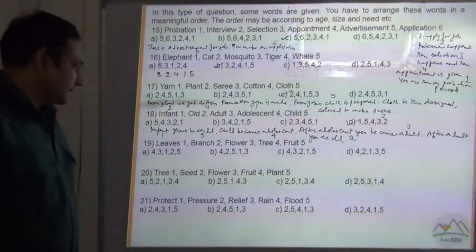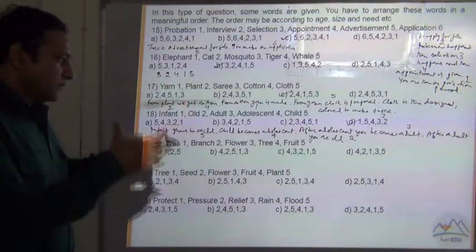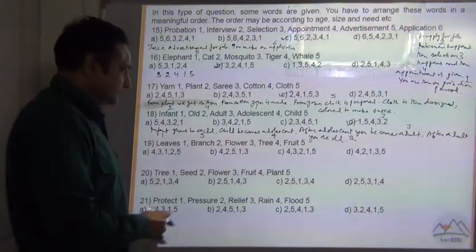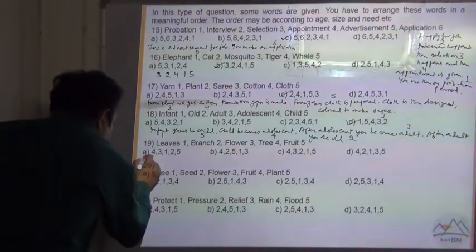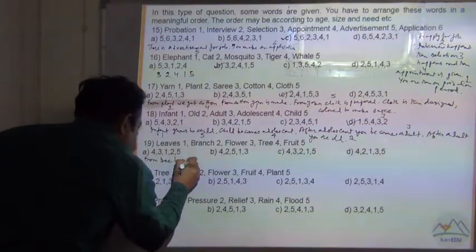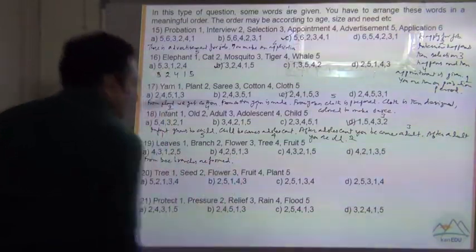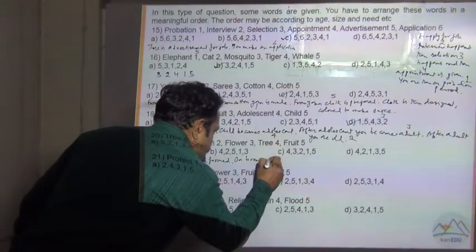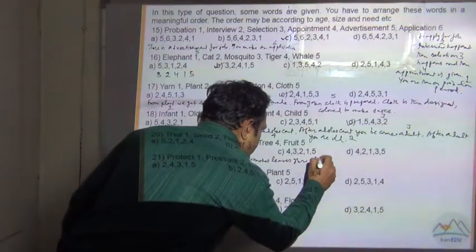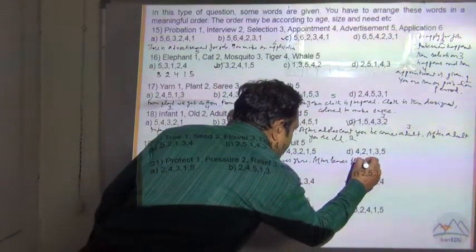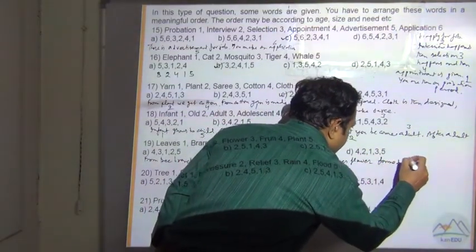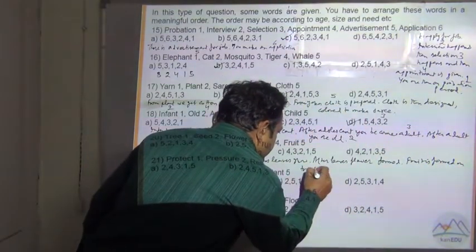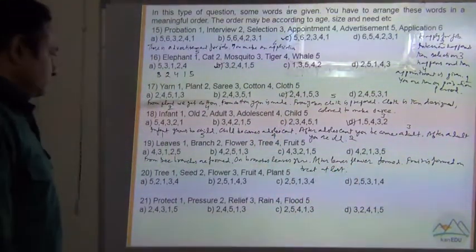So here we see which one grows first, or from where you get what things. From tree, first of all branches are made. So from tree, branches are formed. And on branches, first you get the leaves. So on branches, leaves grow. After leaves, flower is formed. Then fruit is formed on tree at last.